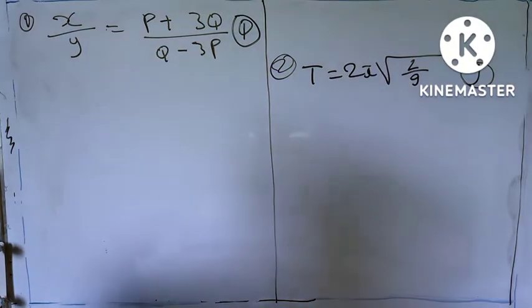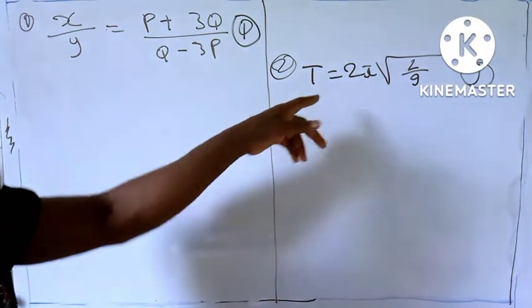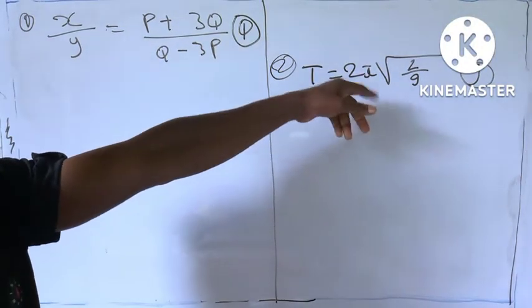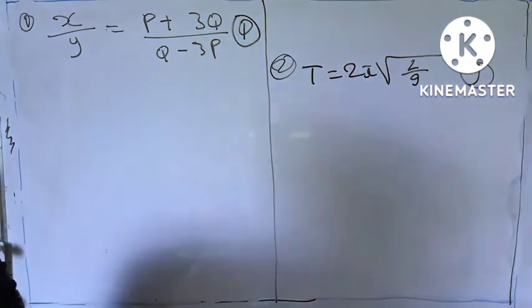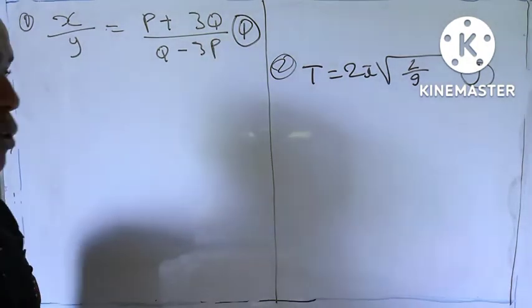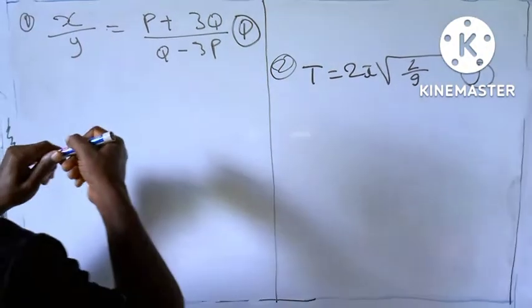Number one is x over y equal to p plus 3q over q minus 3p, while the second is t equal to 2 pi square root of l over g. The first one we are asked to make q the subject of the formula, while the second is g the subject of the formula.